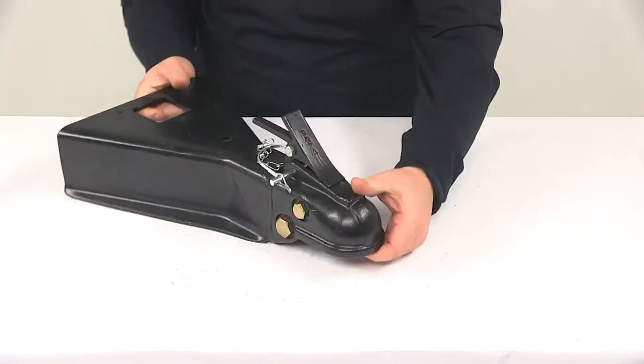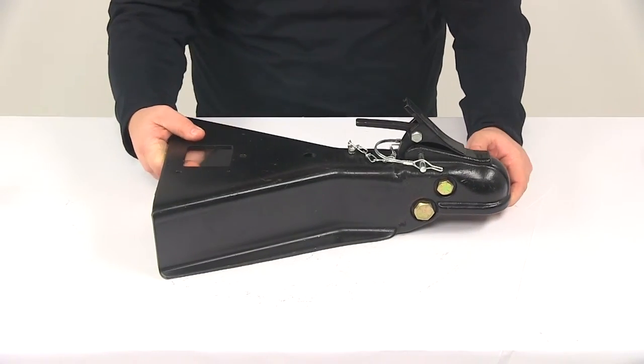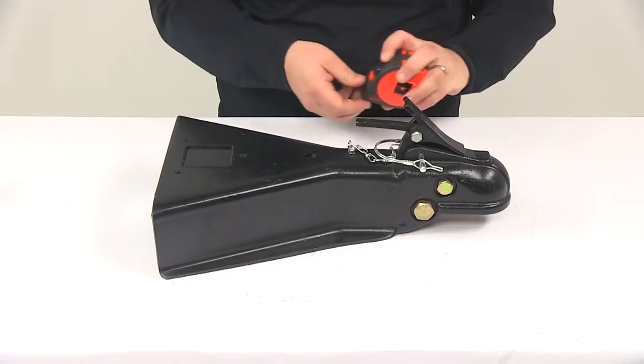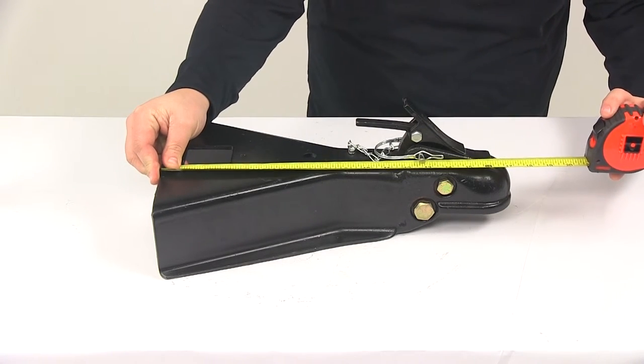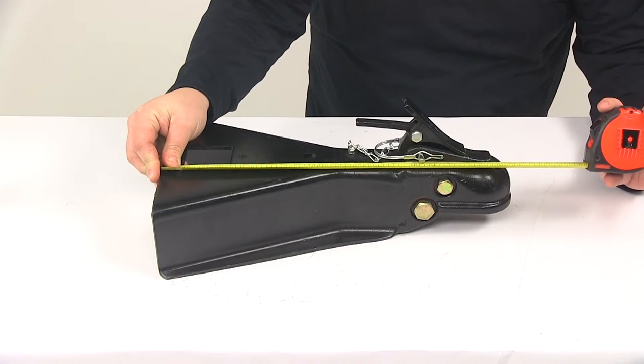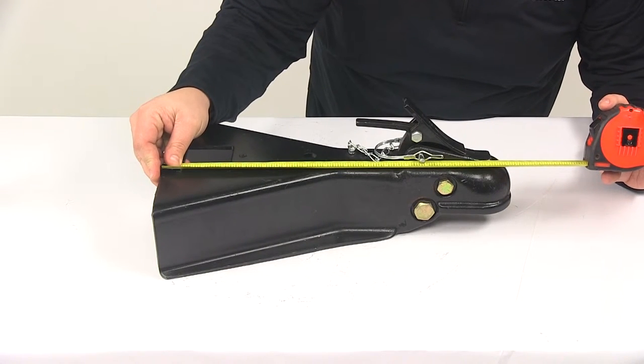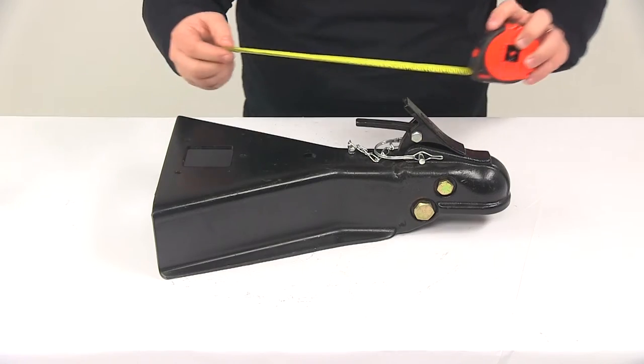Now when it comes to the overall dimensions, starting with the overall length measuring from very back to very front, this is going to give us a measurement of about 17 and a half inches right around that area.